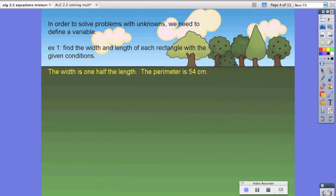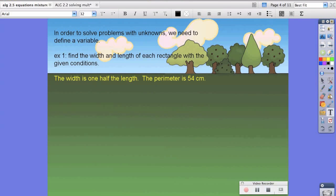What we can do is use our knowledge about translating this English into math. We can say the width, which we don't know, so we'll call it w, and then we have is, which represents the equal sign, and one half, one half the length. The length, again, we don't know, so we're going to say l.